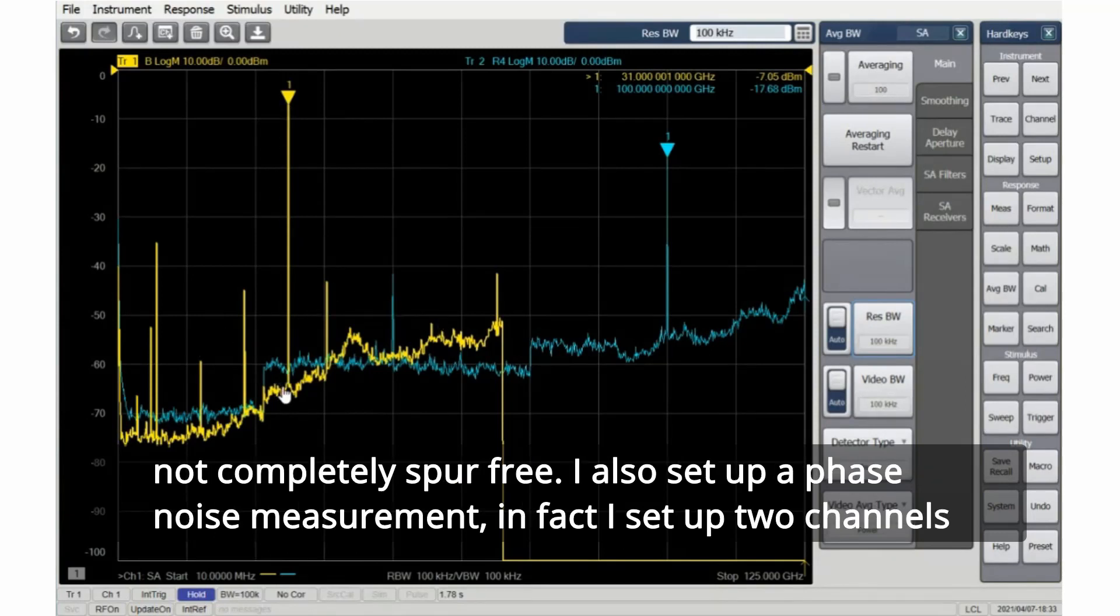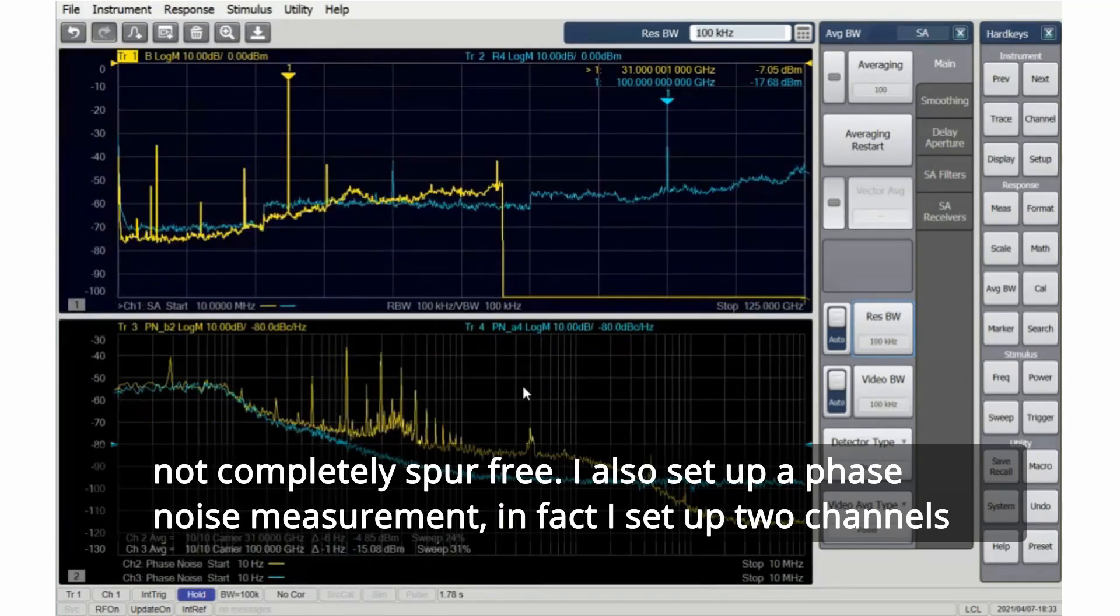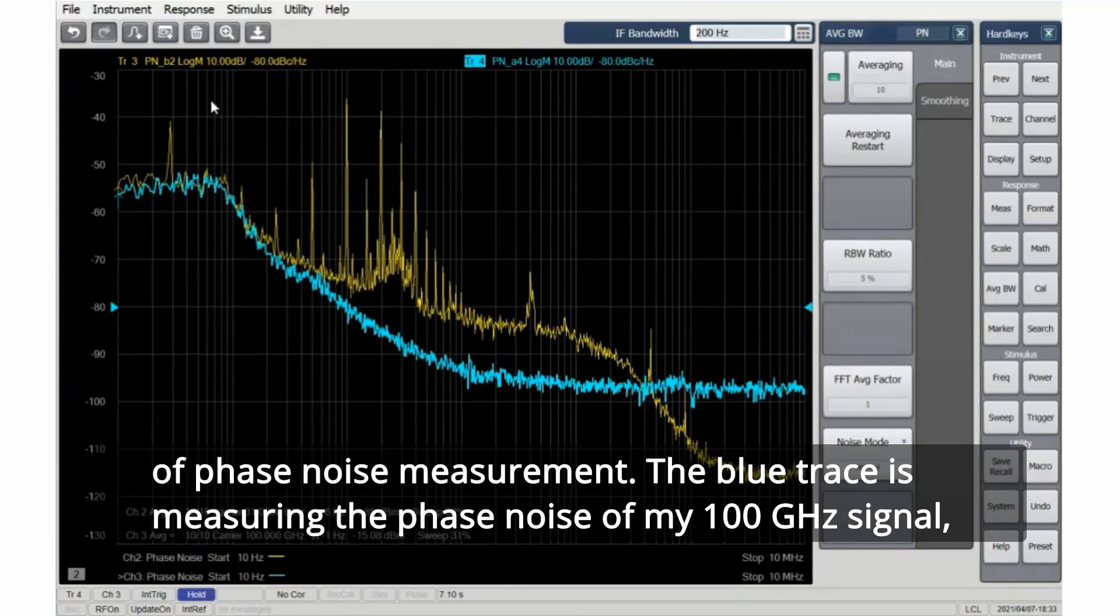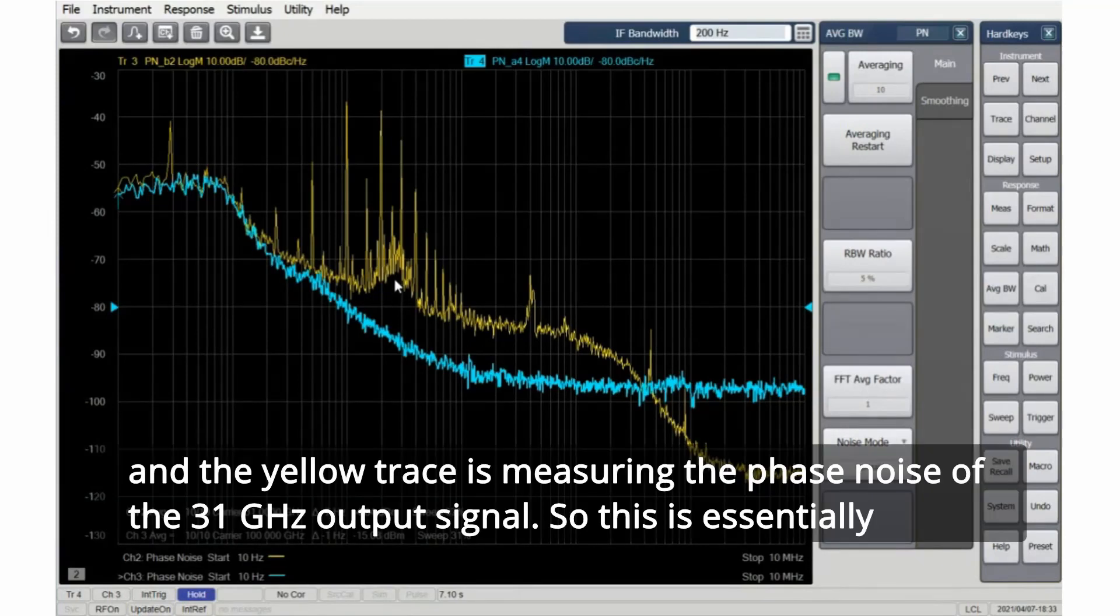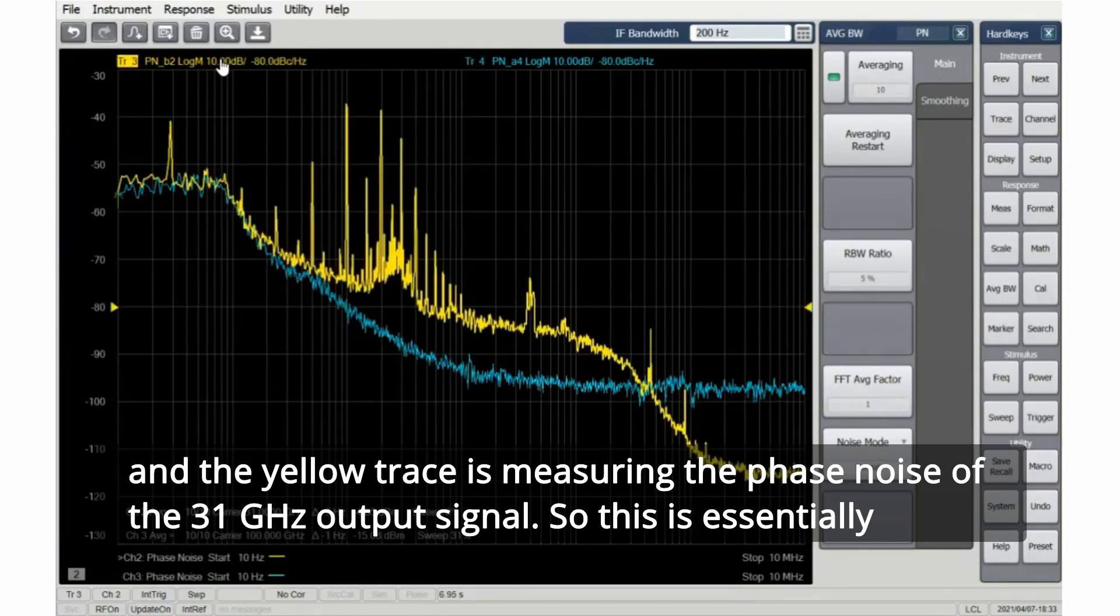I also set up a phase noise measurement. In fact, I set up two channels of phase noise measurement. The blue trace is measuring the phase noise of my 100 gigahertz signal and the yellow trace is measuring the phase noise of the 31 gigahertz output signal. So this is essentially measuring the phase noise of the internal local oscillator.